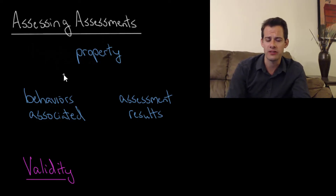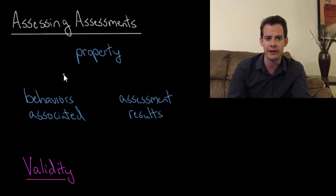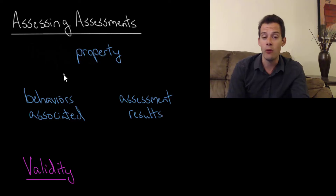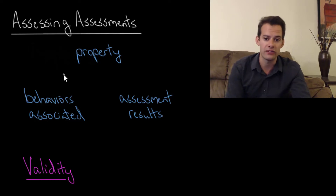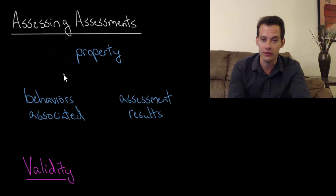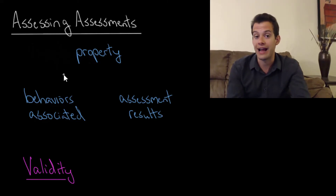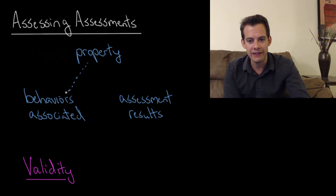How do we determine that? When we think about something like intelligence, remember it's a property — it's a hypothetical idea, something we think exists. The reason we think it exists is because there are certain behaviors we associate with it. We see that people vary in their performance on certain types of tasks, and then we create an assessment that is hopefully related to this hypothetical property of intelligence. So we have three parts: a property, associated behaviors, and an assessment.